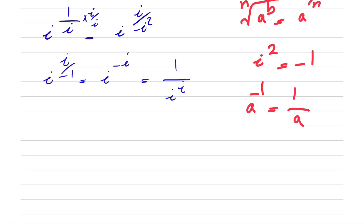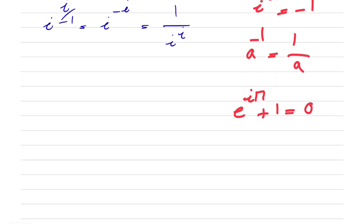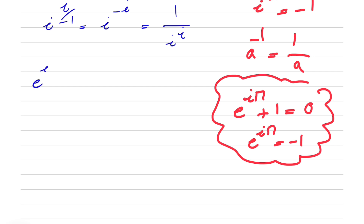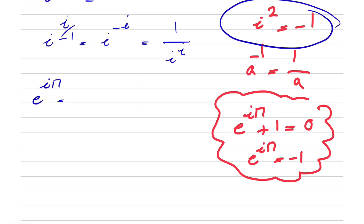From Euler's identity, we know that e to the power of i pi plus 1 is equal to 0. Or basically if you bring 1 to the right side, e to the power of i pi is equal to minus 1. We know e to the power of i pi equals minus 1, which is what we have for i squared, so this can be written as i squared.